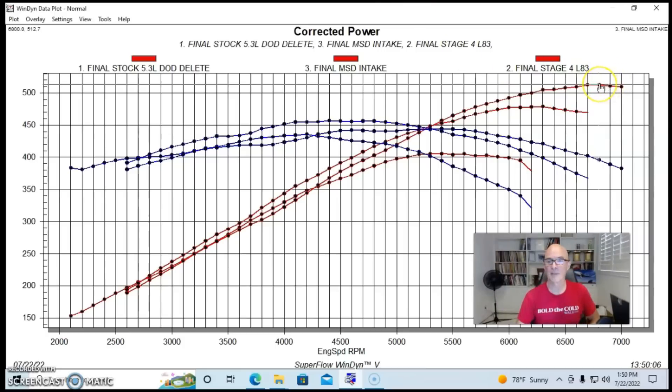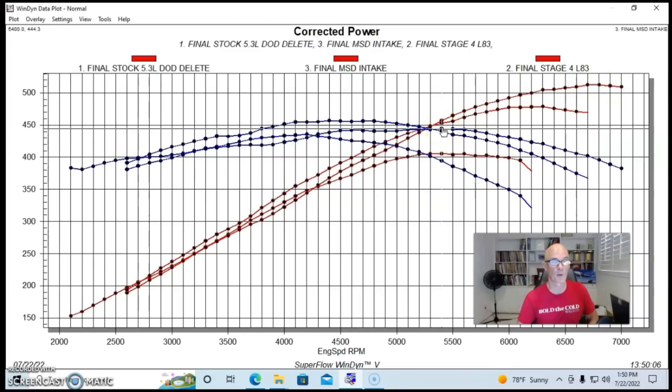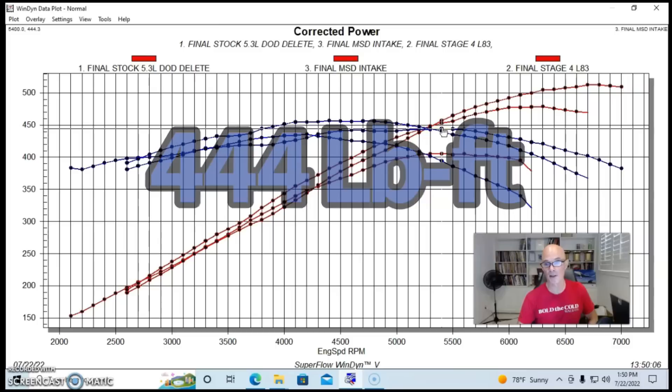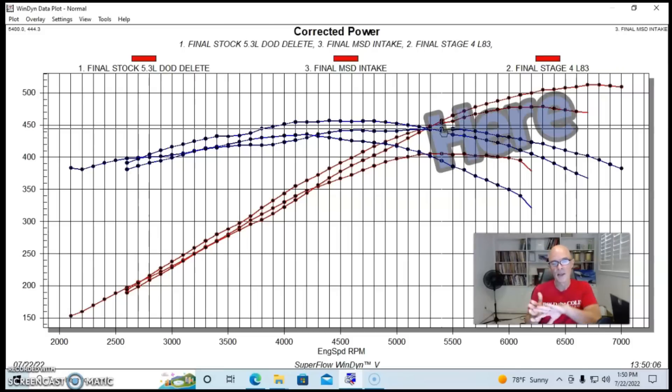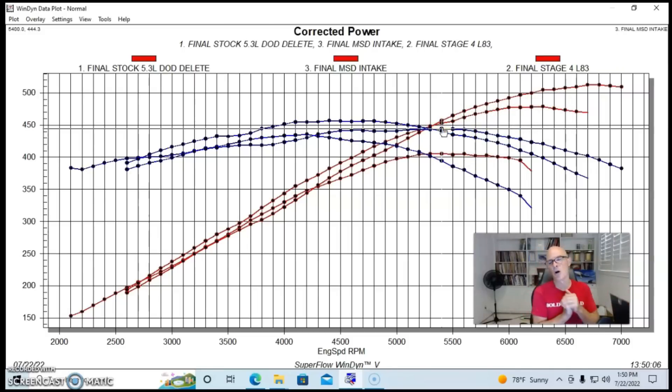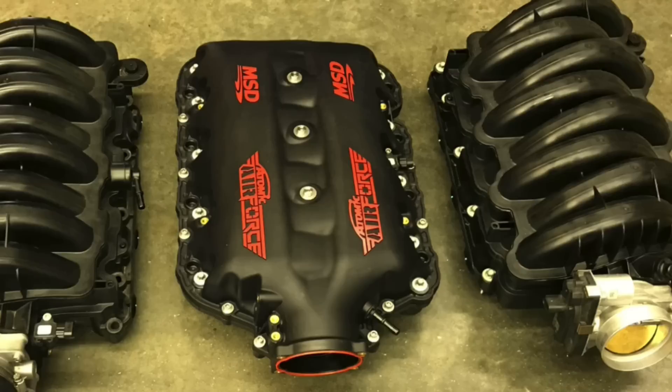With the MSD intake, this combination produced 513 horsepower. Peak torque was actually down slightly to 444 foot pounds. And as you can see, the short runner intake manifold lost out from about 5400 RPM and below. The short runner lost out to the longer runner intake manifold. So honestly, this might not be the way to go unless you're really wanting to run this thing from like 5,000 to 7,000 RPM in your drag racing. Know that that short runner manifold will work pretty well compared to the long runner.